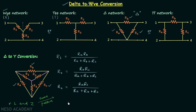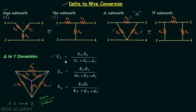Now we are going to prove that R1 equals RA·RB divided by RA plus RB plus RC. We focus on the Y network — if we apply a voltage source between terminals 1 and 2, current will flow through R1, then through R3, and back to the source. This means no current flows through R2, so the equivalent resistance is R1 plus R3 in series.